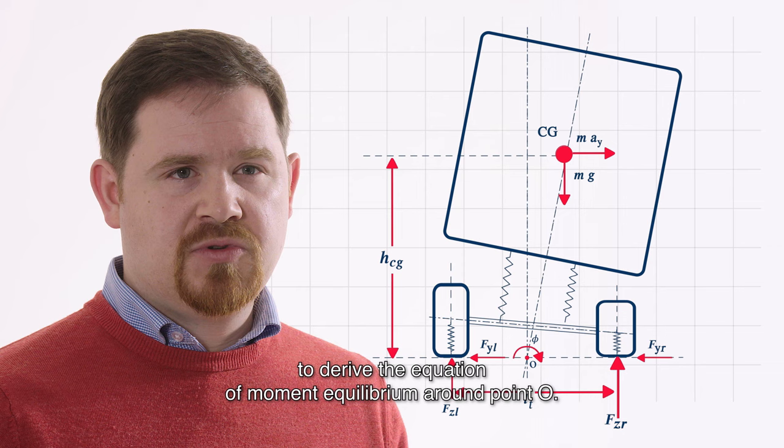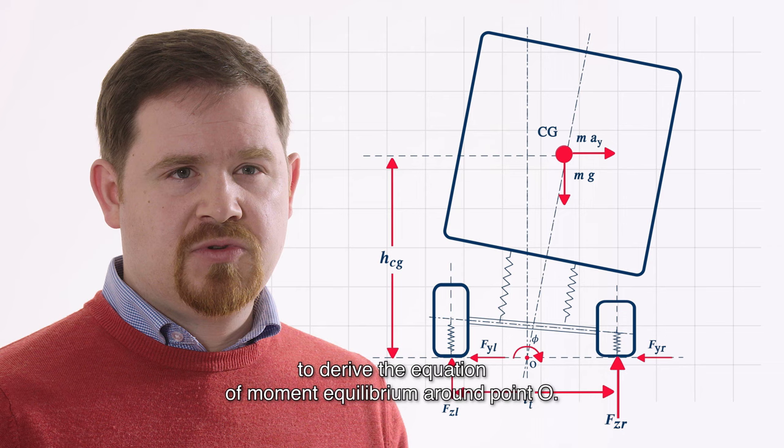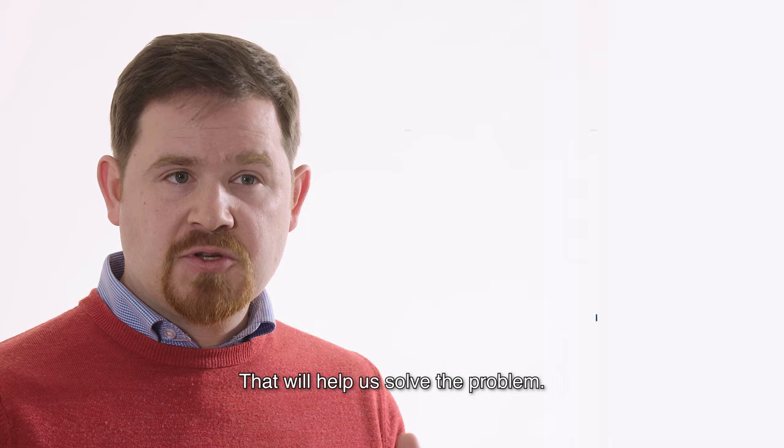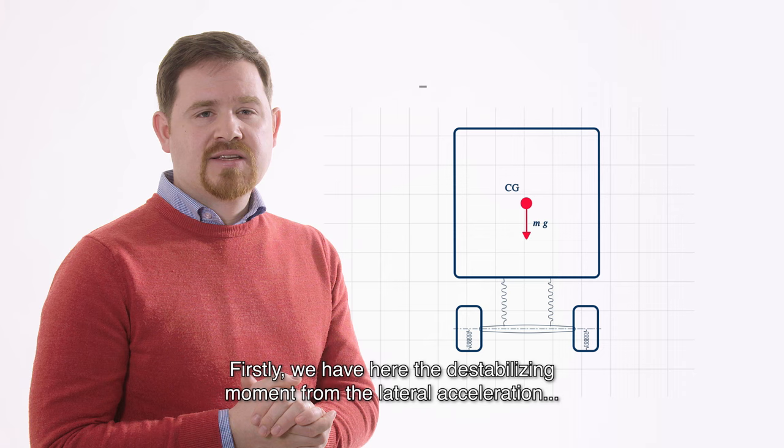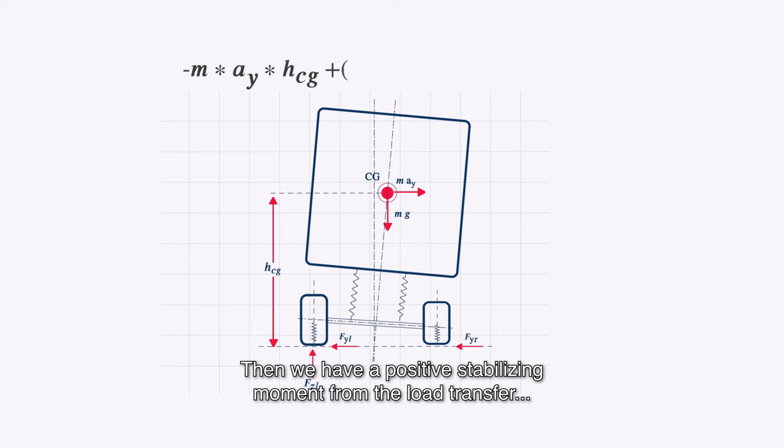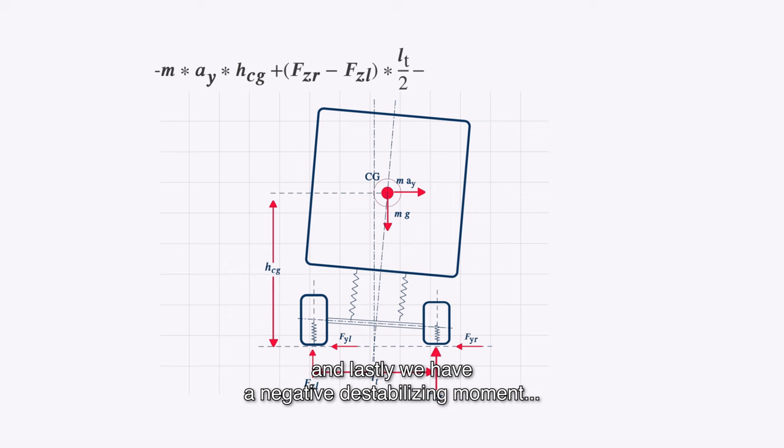Now we can use the free body diagram as a base to derive the equation of moment equilibrium around point O. That will help us to solve the problem. Firstly, we have here the destabilizing moment from the lateral acceleration acting in negative direction. Then we have a positive stabilizing moment from load transfer. And lastly, we have a negative destabilizing moment coming from the lateral displacement.